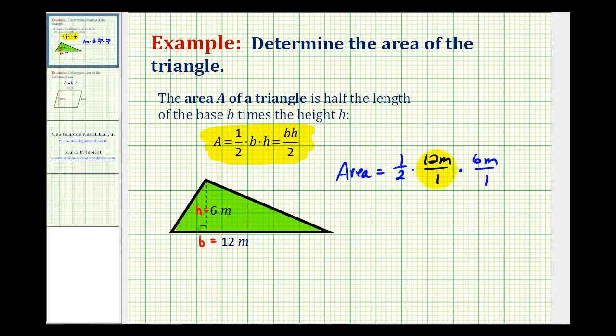Before we multiply though, we should try to simplify. Notice that two and the twelve have a common factor of two. So I'm going to go ahead and write this as one-half times, I'll write twelve as two times six meters. And this just emphasizes the common factor of two. And notice that two over two would simplify to one. So now we can go ahead and multiply.